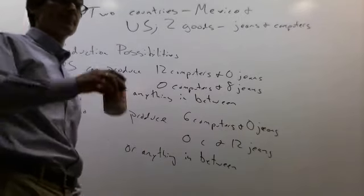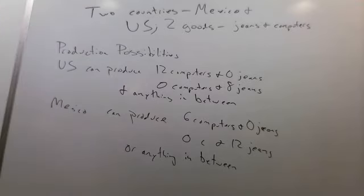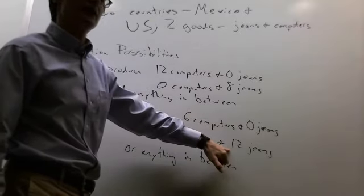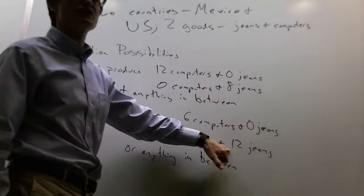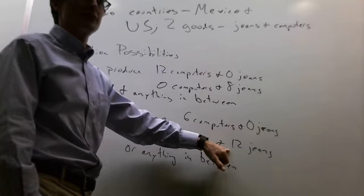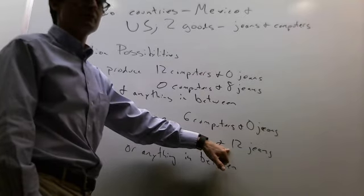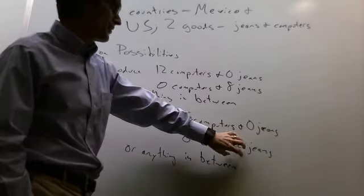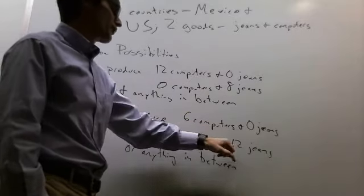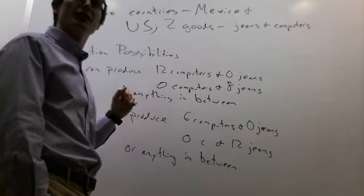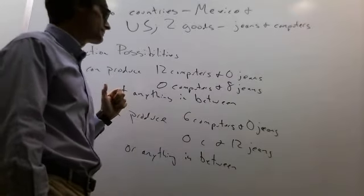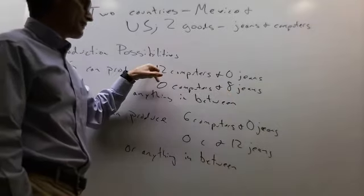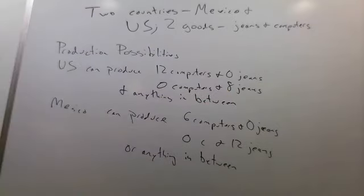A student asks for clarification. Starting at 12 jeans and no computers: if you shift all the way to only computers, you get six. So for every two jeans you give up, you get one computer. And for the U.S.: if you give up 12 computers you get 8 jeans, so for every one computer you give up you get two-thirds of a pair of jeans. That ratio — 12 computers to 8 jeans — gives us the slope of the production possibilities frontier.